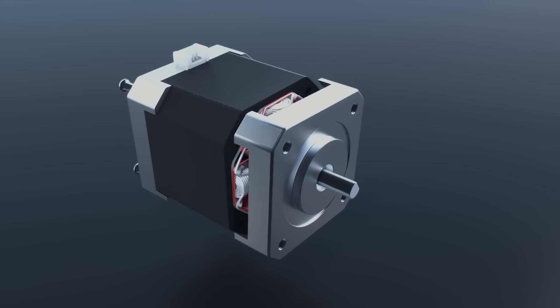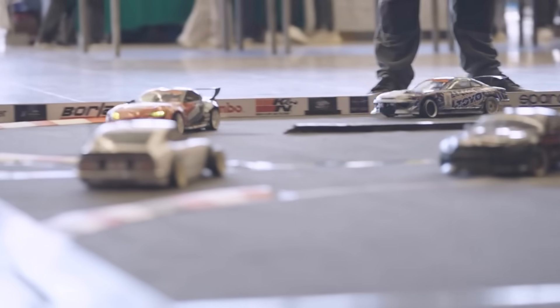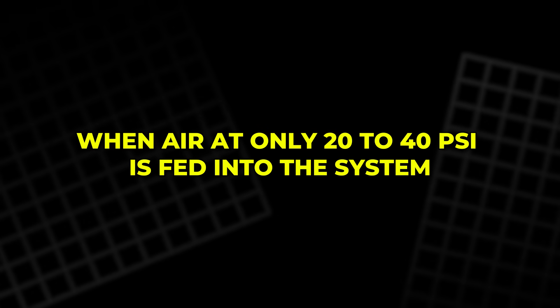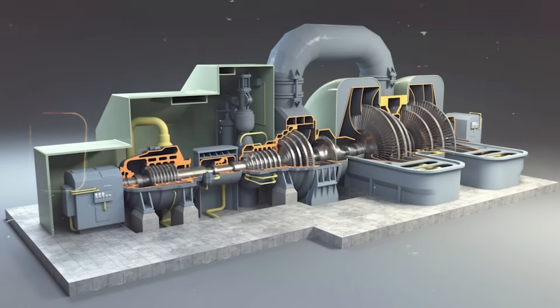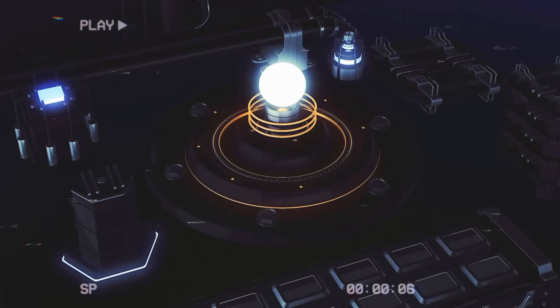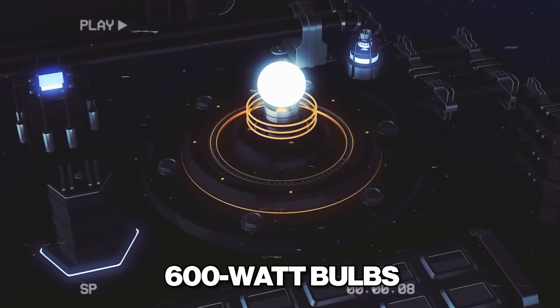The turbine is coupled with brushless DC motors salvaged from RC cars, used here as electrical generators. When air at only 20-40 psi is fed into the system, the turbine spins fast enough to generate over 1,200 watts, enough to light two 600-watt bulbs.